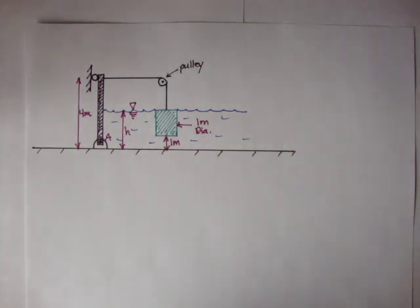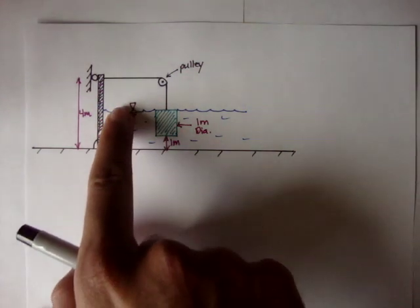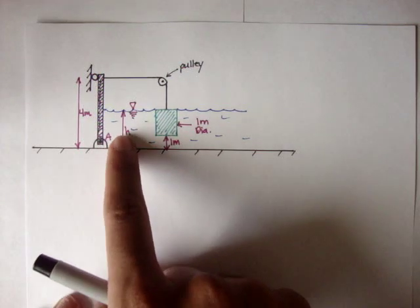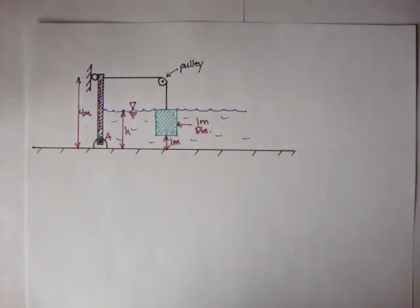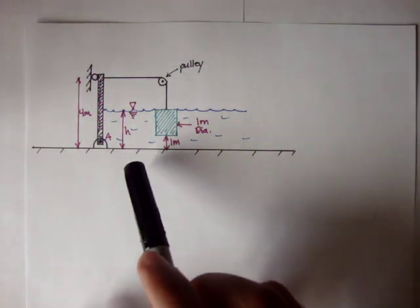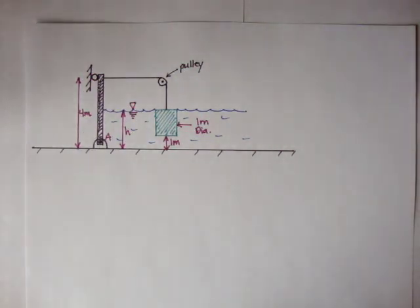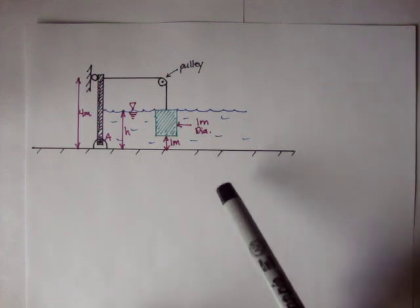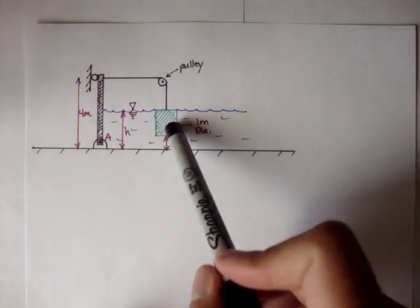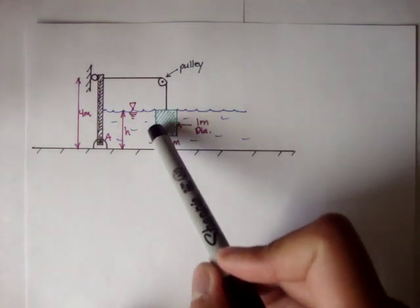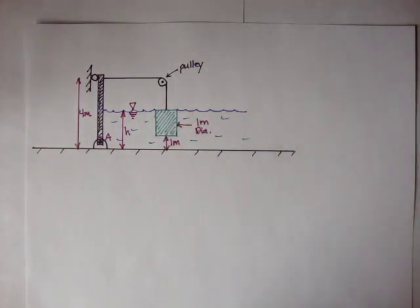And the gate is to open when the water level H reaches or drops below 2.5 meters. So when H is 2.5 meters, the gate begins to open. And they want us to determine the required value for M. So they want us to figure out what the mass of this block is.